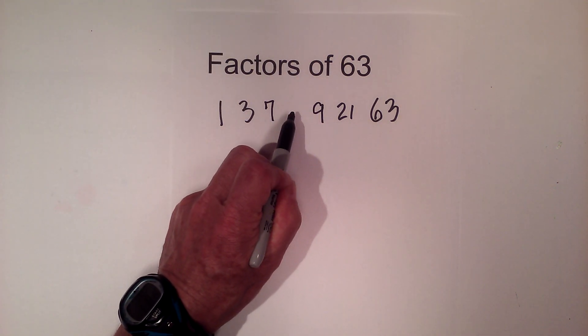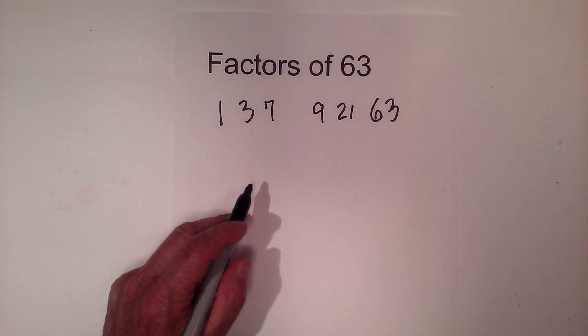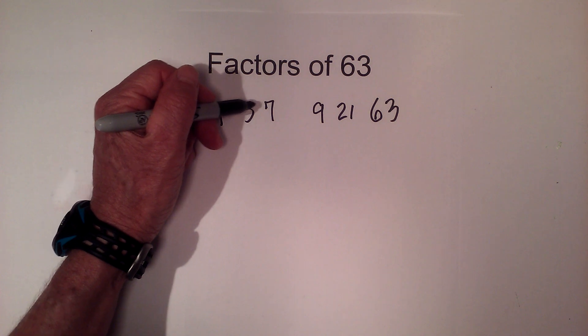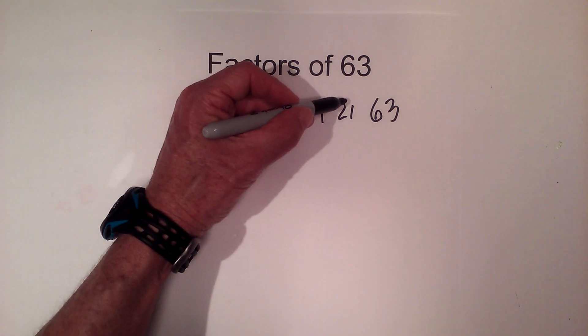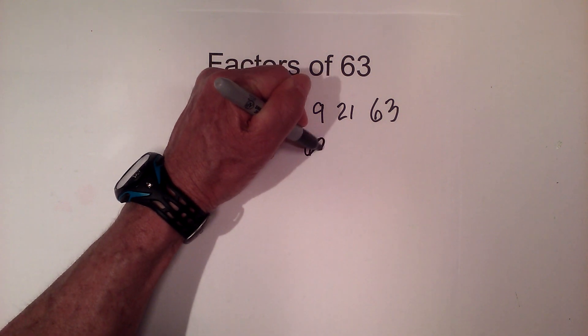The only number left in between these two is 8. 8 does not go into 63, so we have all the factors: 1, 3, 7, 9, 21, and 63. Now let's find the prime factors of 63.